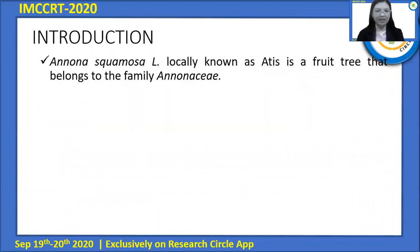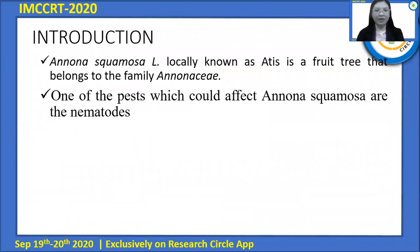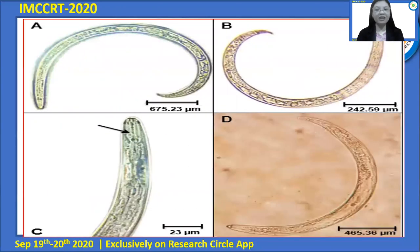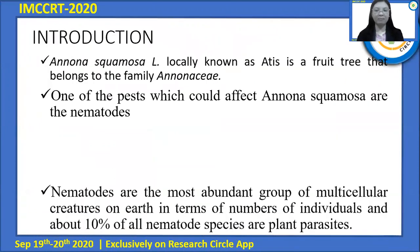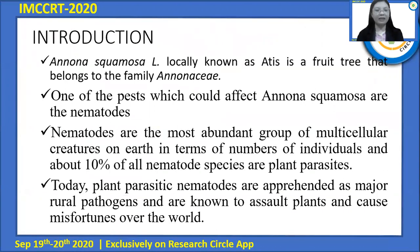For the introduction, Anona Squamosa, locally known as Atis, is a fruit tree that belongs to the family Anonaceae. One of the pests which could affect Anona Squamosa are nematodes. Plant parasitic nematodes are among the most important agricultural pests and cause serious crop losses worldwide. Nematodes mostly inhabit the soil and usually attack the underground parts of plants, which is why their management is more difficult than that of other pests. They are the most abundant group of multicellular creatures on earth, and about 10% of all nematode species are plant parasites.